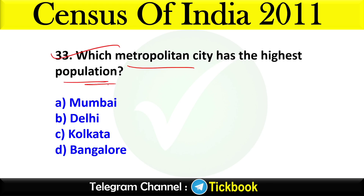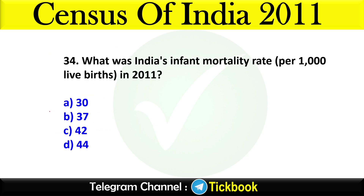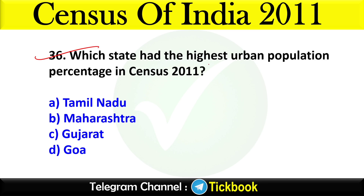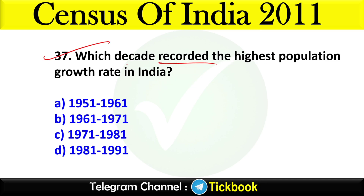Question thirty-three: Which metropolitan city has the highest population? Option number A: Mumbai is the right answer. Question thirty-four: What was India's infant mortality rate per thousand live births in 2011? Option number D: 44 is the right answer. Question thirty-five: In Census 2011, which union territory had the highest child sex ratio? Option number C: Andaman and Nicobar Islands. Question thirty-six: Which state had the highest urban population percentage in Census 2011? Option number D: Goa is the right answer. Question thirty-seven: Which decade recorded the highest population growth rate in India? Option number B: 1961 to 1971.